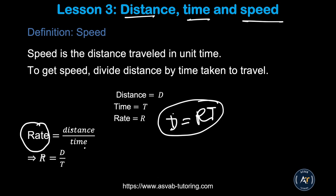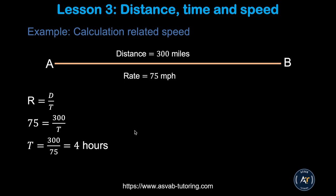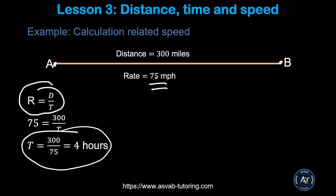You also need this formula for mechanical comprehension if you have the SIFT test or ASTB. For the AFOQT you don't need that, but you still need this concept. Let's do a problem: you are driving from point A to point B, which is 300 miles apart. If you drove 70 miles per hour, how long did it take? Using rate equals distance over time, with a rate of 75, simplifying gives T equal to 4 hours. So if you drive 300 miles at that speed, you need 4 hours to get there.